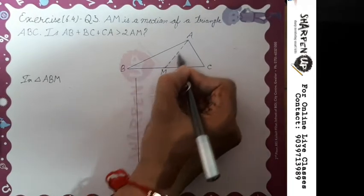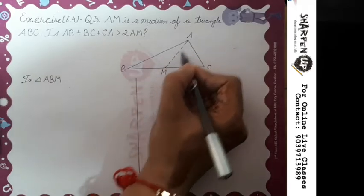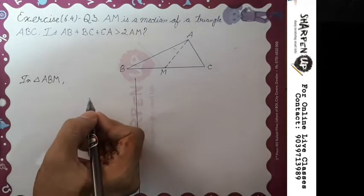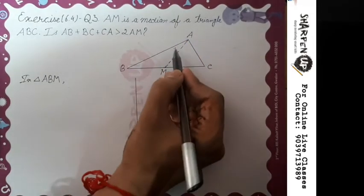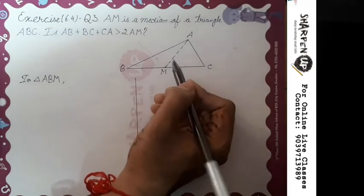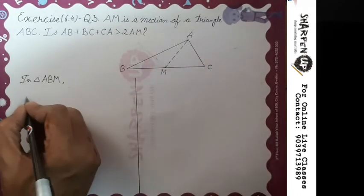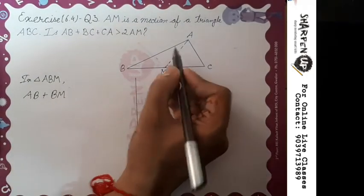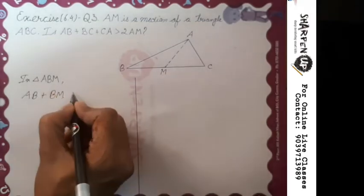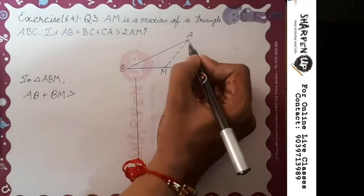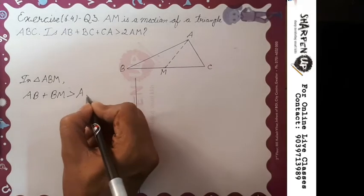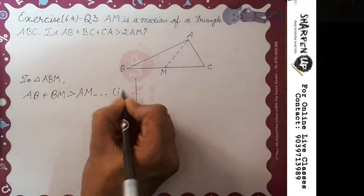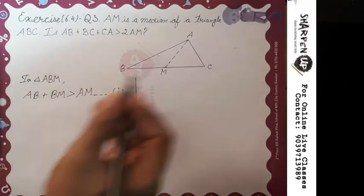In triangle ABM, by the property of triangle inequality, we know that the sum of two sides is always greater than the third side. So if I add AB plus BM, it will be greater than the third side AM. Let's consider this our first expression.